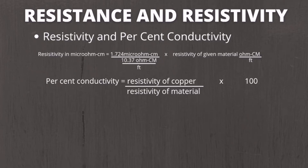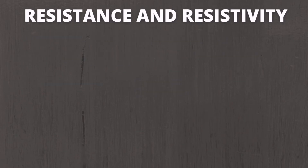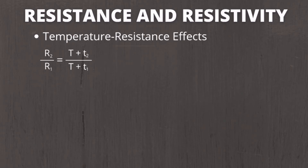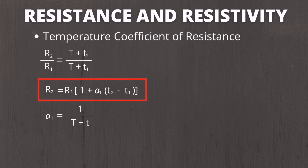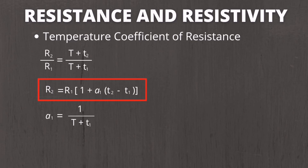As a summary: for resistivity and percent conductivity, the resistivity in micro ohm centimeter is solved by 1.724 micro ohm centimeter divided by 10.37 ohm circular mil over feet, times the resistivity of the given material. Percent conductivity equals resistivity of copper divided by resistivity of given material times 100. For temperature resistance effects: R2 over R1 equals constant T plus T2 over constant T plus T1. For temperature coefficient of resistance: R2 equals R1 times [1 plus alpha_1 times (T2 minus T1)]. I hope you learned something — see you in the next vlog.